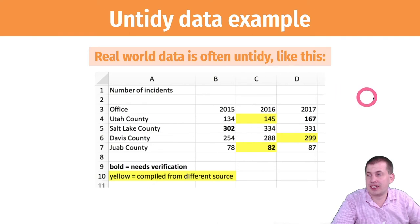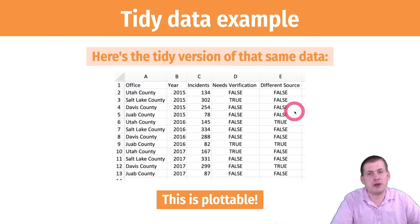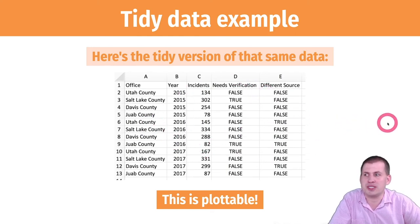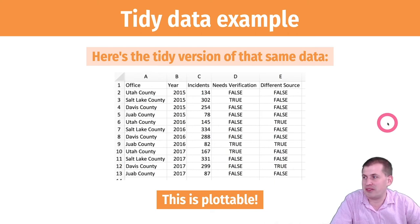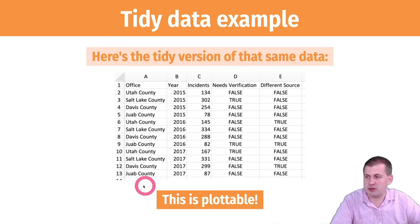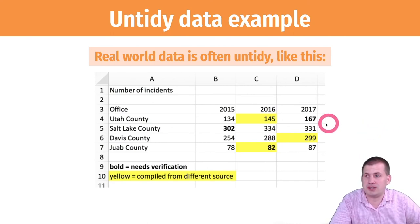The tidy version of that data looks like this: a column for office, a column for year, a column for incidents, a column for whether it needs verification, and a column for whether it came from a different source. This works great for computers — you just tell it to use the year column or the incidents column and it will. However, this kind of data structure is really hard for humans to type in, because everything gets repeated a lot.